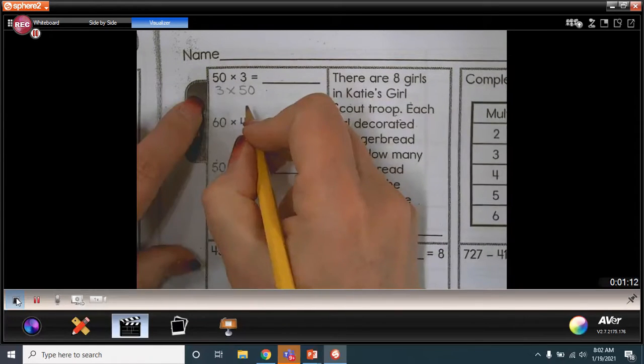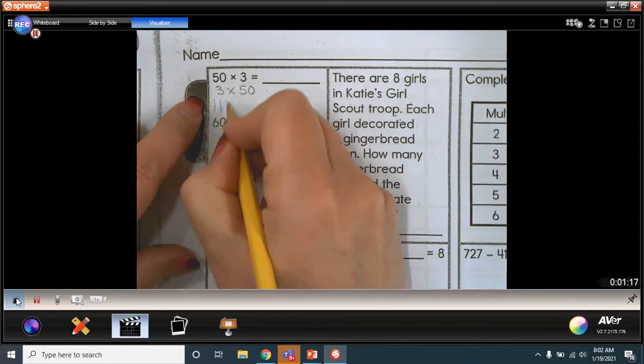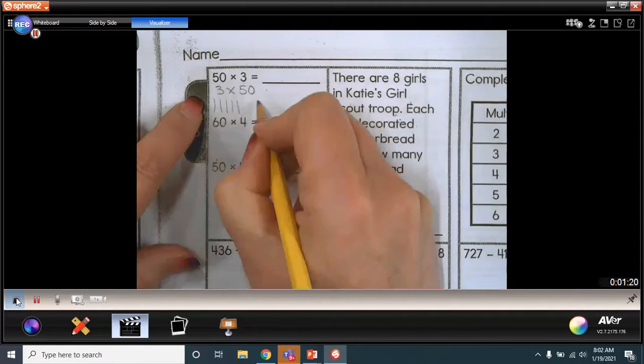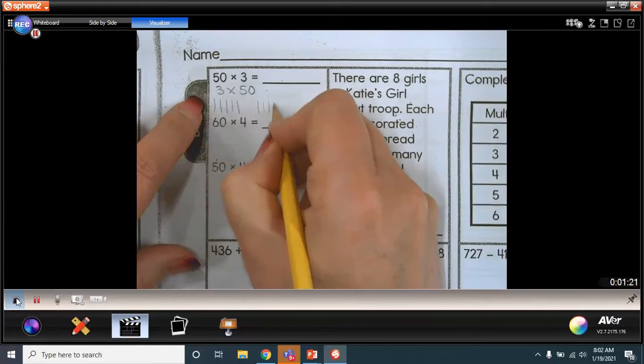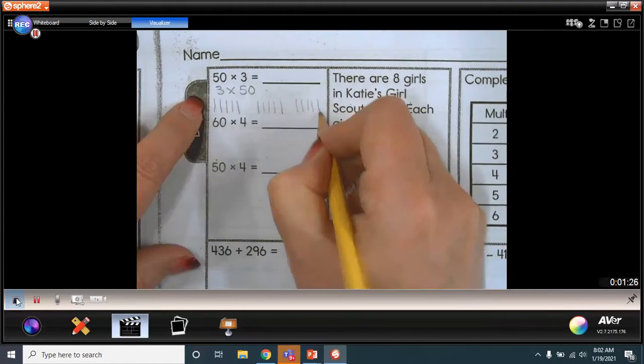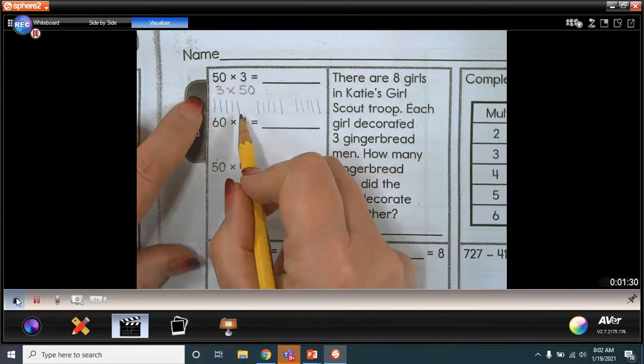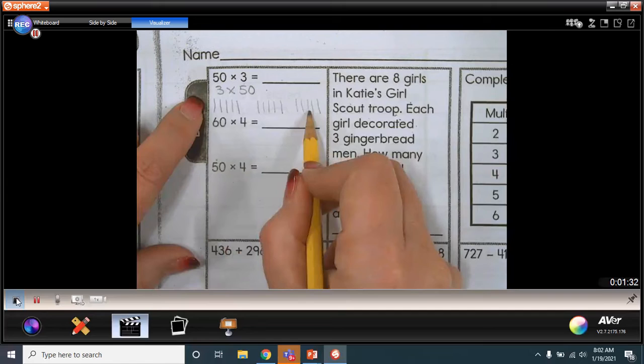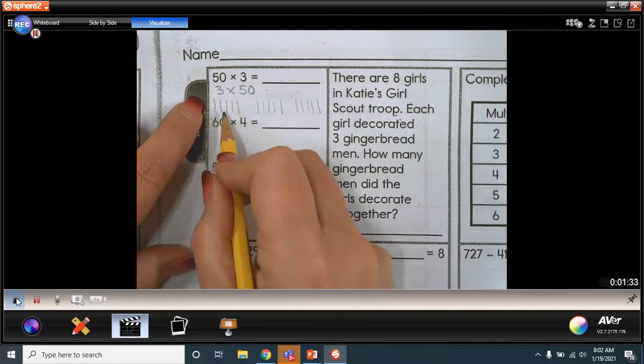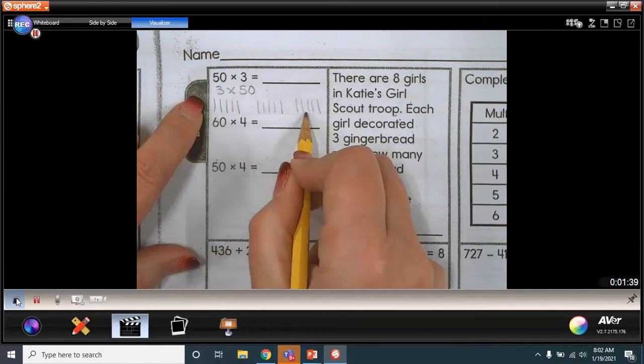Let's take a look at adding three groups of 50. Now remember, if you were thinking about base 10 blocks, we would have 10, 20, 30, 40, 50, and another 50, and another 50. So 50 is like counting by fives. I'd have 5, 10, 15. Well, in this case, I have 50 and 50, which is 100, and then another 50 would be 150.